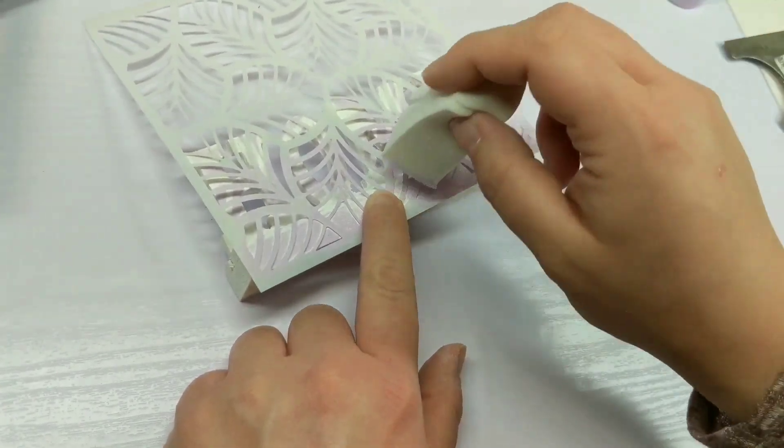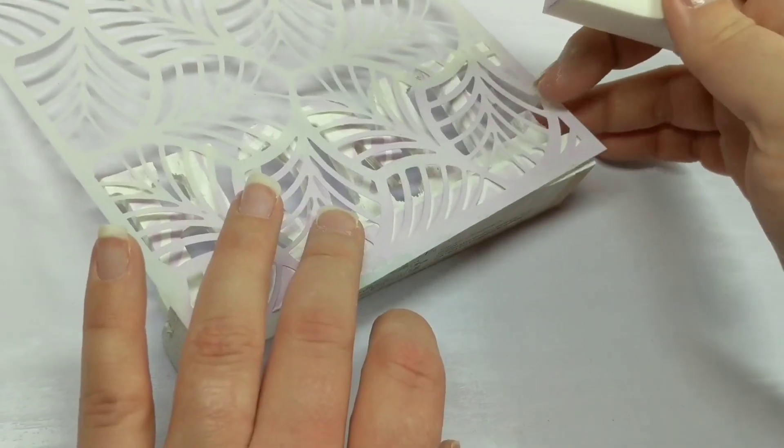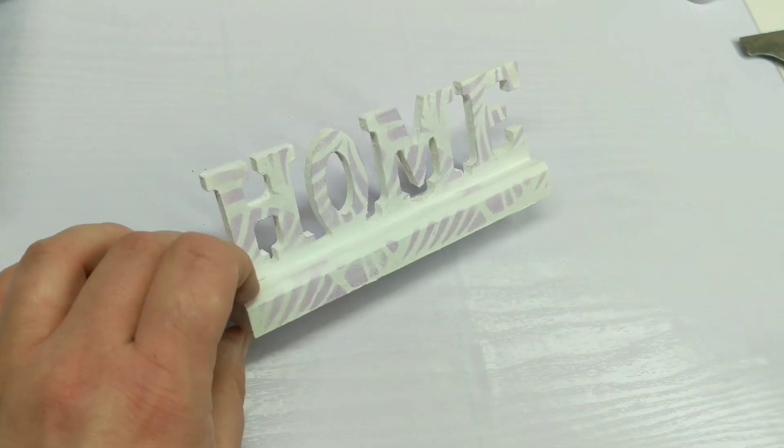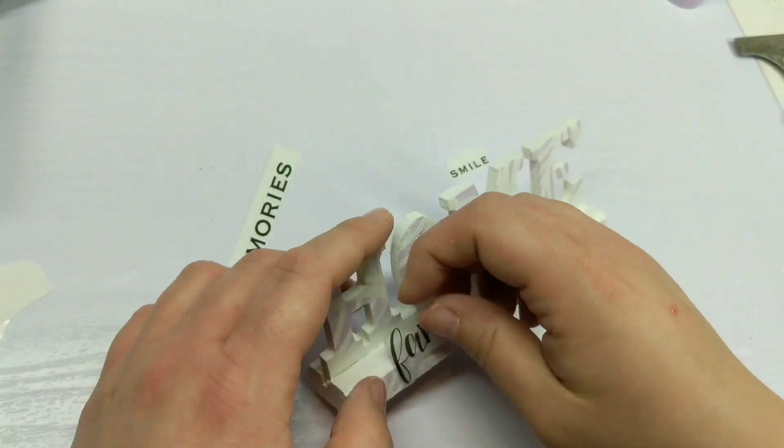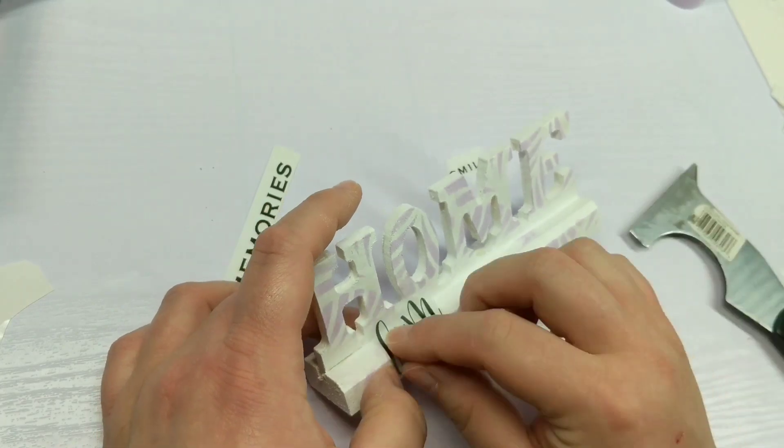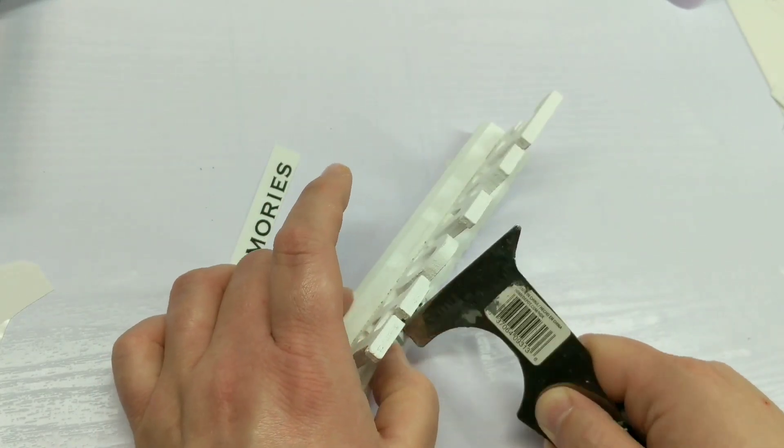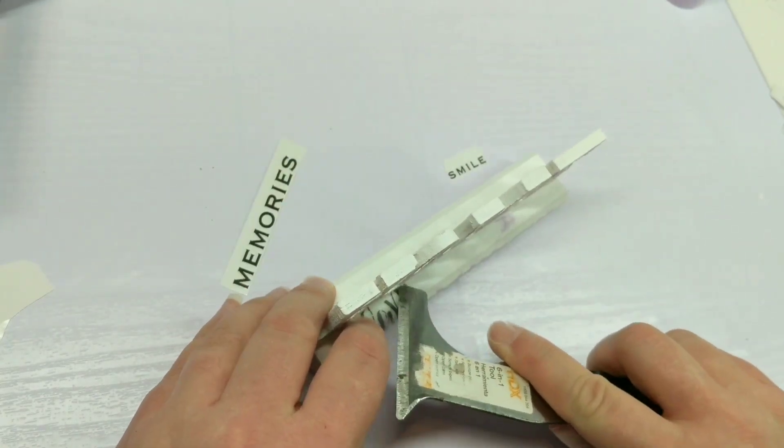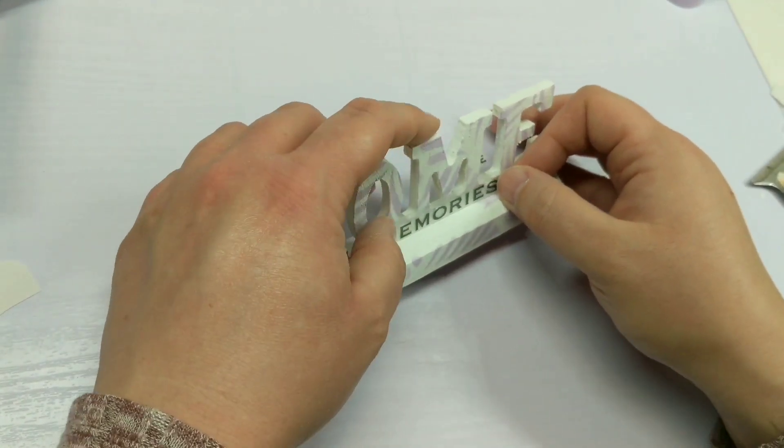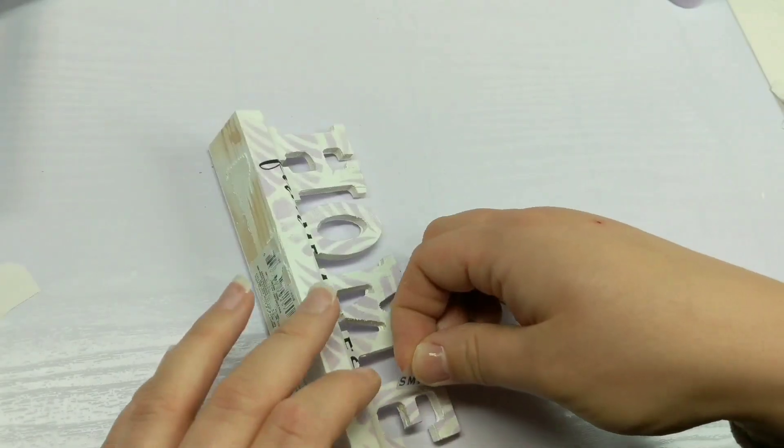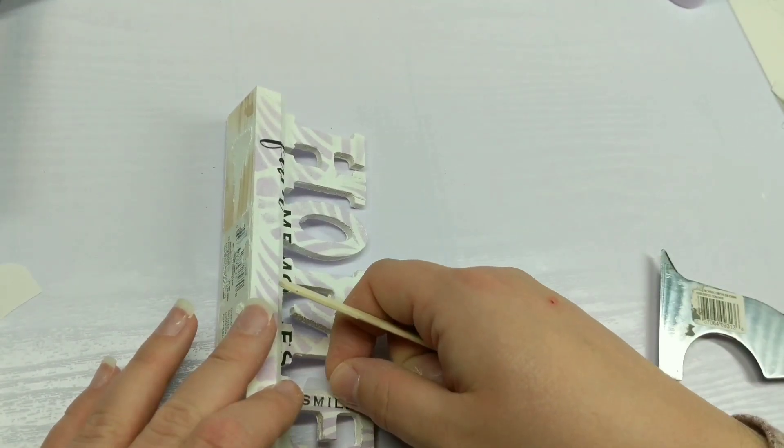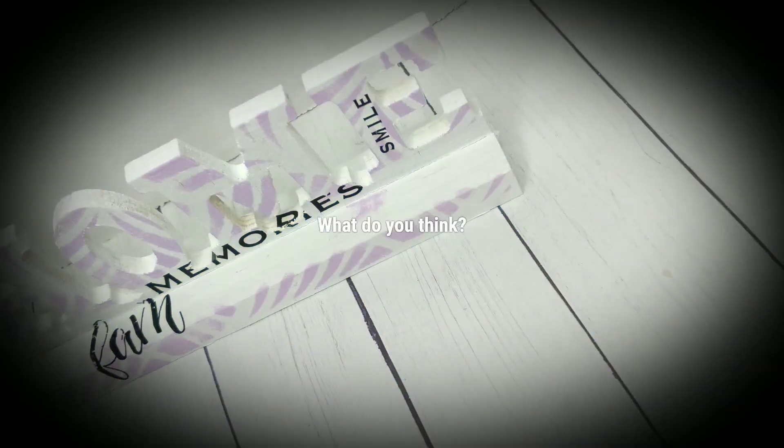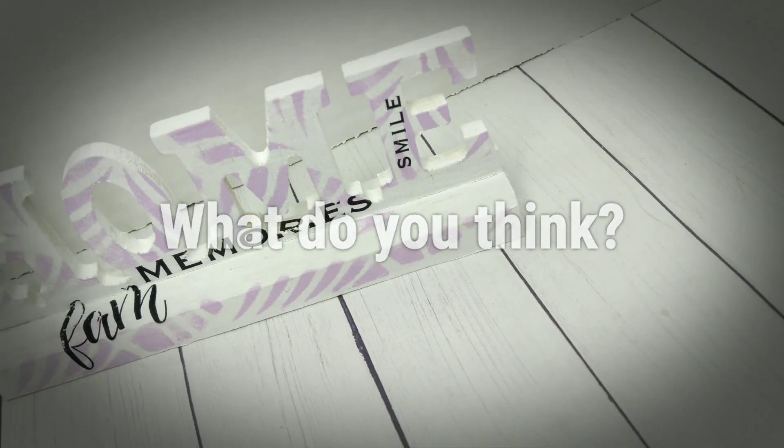These stencils I ordered off Amazon - I can link them below. They're so great. After I got this on there I wasn't necessarily a hundred percent happy with the stencil I picked, but it was already done so I left it. I thought it was fun that this was a home sign and I'm putting fam and memories and smile on there - all little things that you do at home.